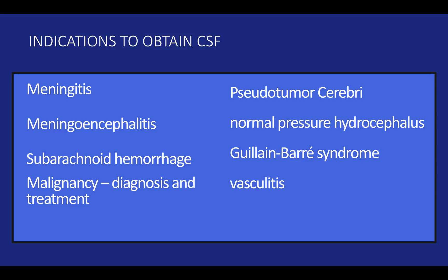Let's go over the indications you need to know. Please review this slide briefly. To read them off: meningitis, meningoencephalitis, subarachnoid hemorrhage, malignancy for diagnosis and sometimes treatment, pseudotumor cerebri, normal pressure hydrocephalus, Guillain-Barré syndrome, and vasculitis. This is not an all-inclusive list, so please feel free to review more on your own.